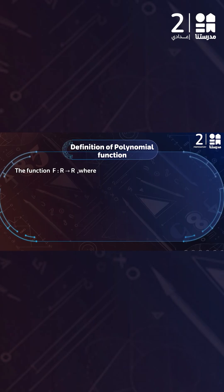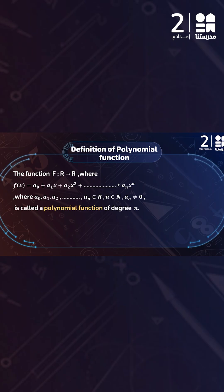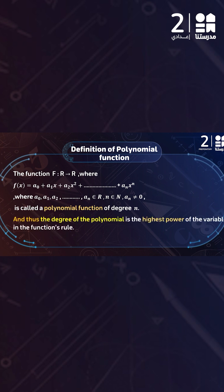The formal definition: the polynomial function is f from R to R, where f(x) = a₀ + a₁x + a₂x² + … + aₙxⁿ. Every coefficient a here represents a real number, and the variable is x. This expression is called the rule of the function, and we call it a polynomial function of degree n.